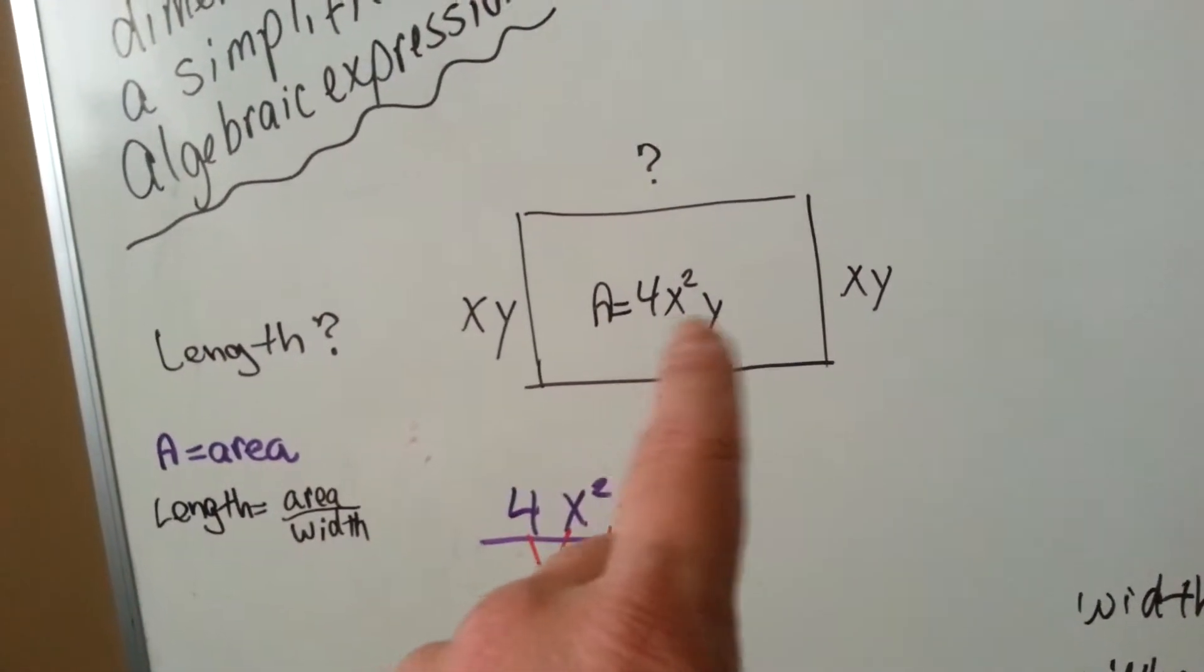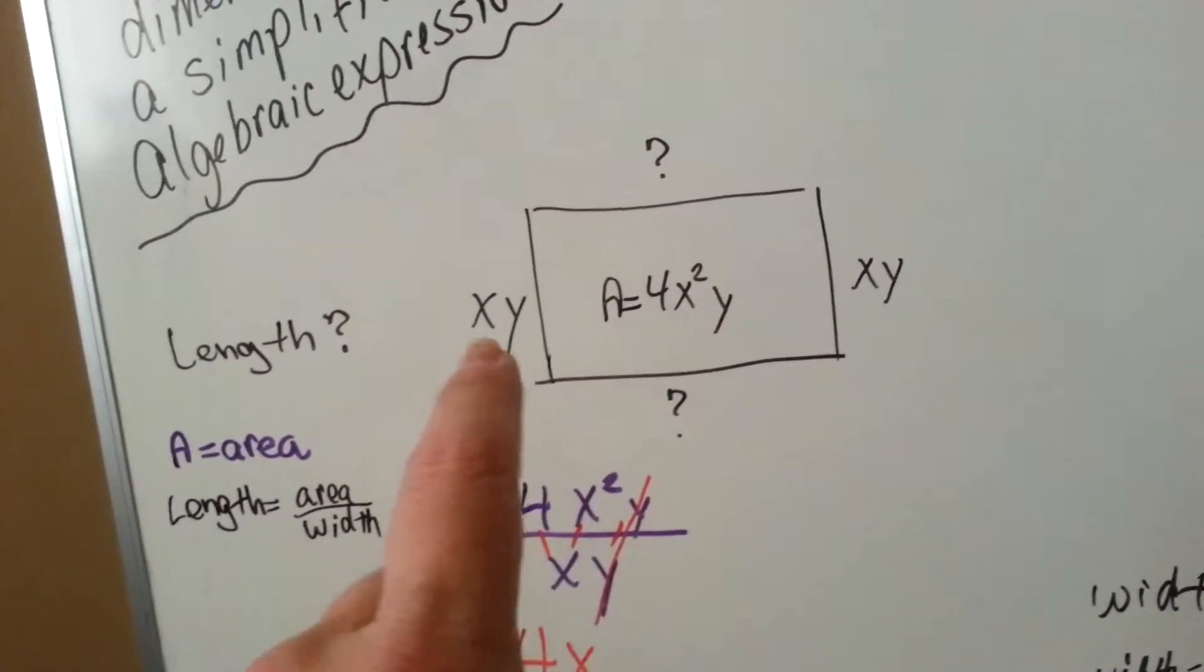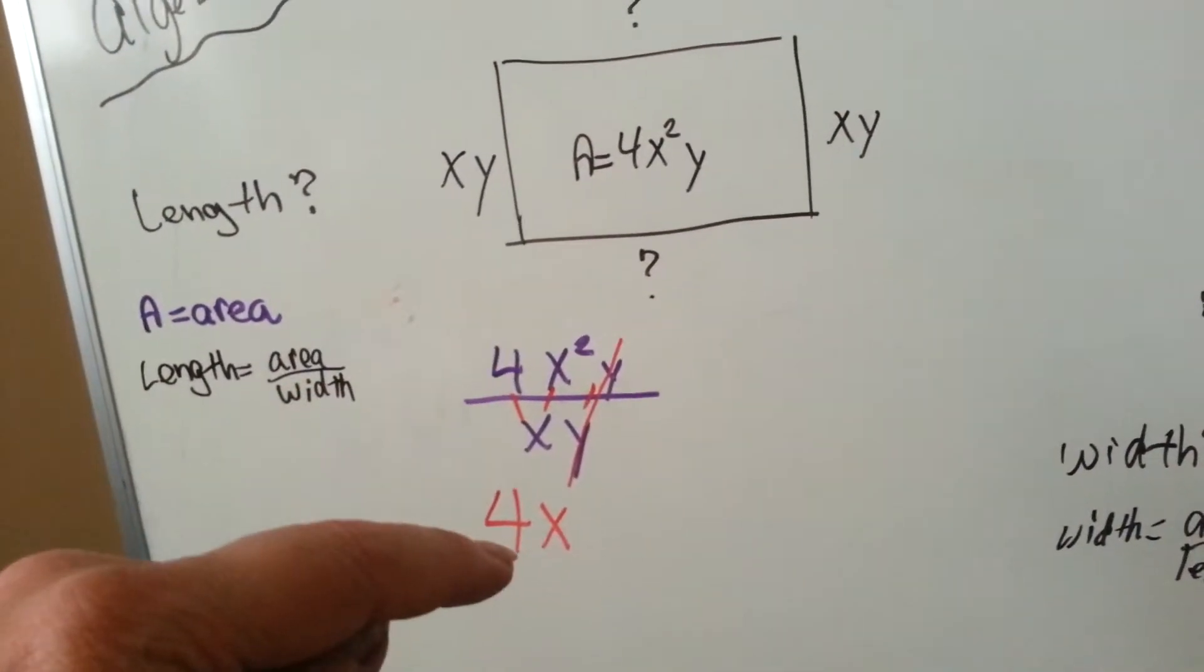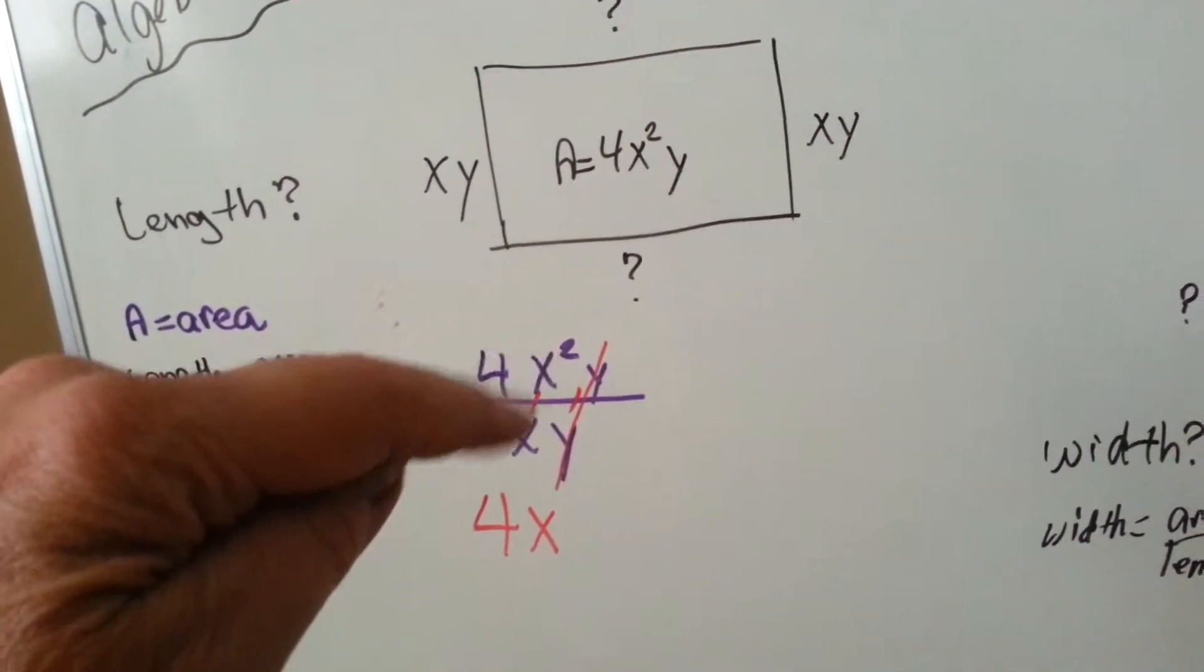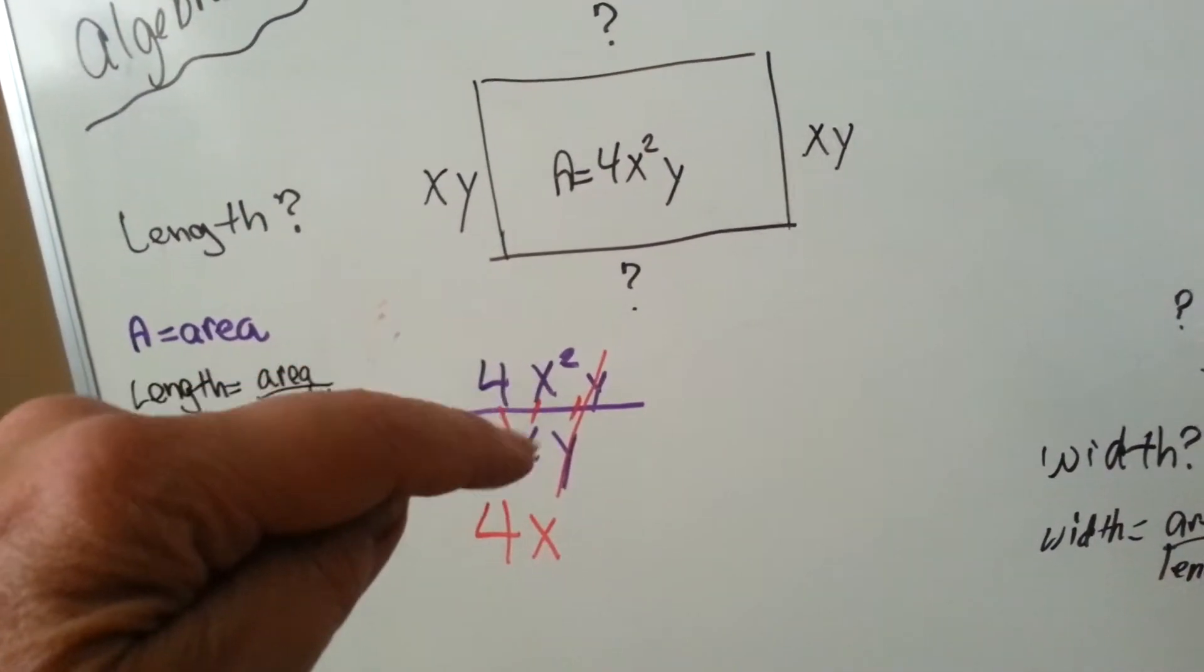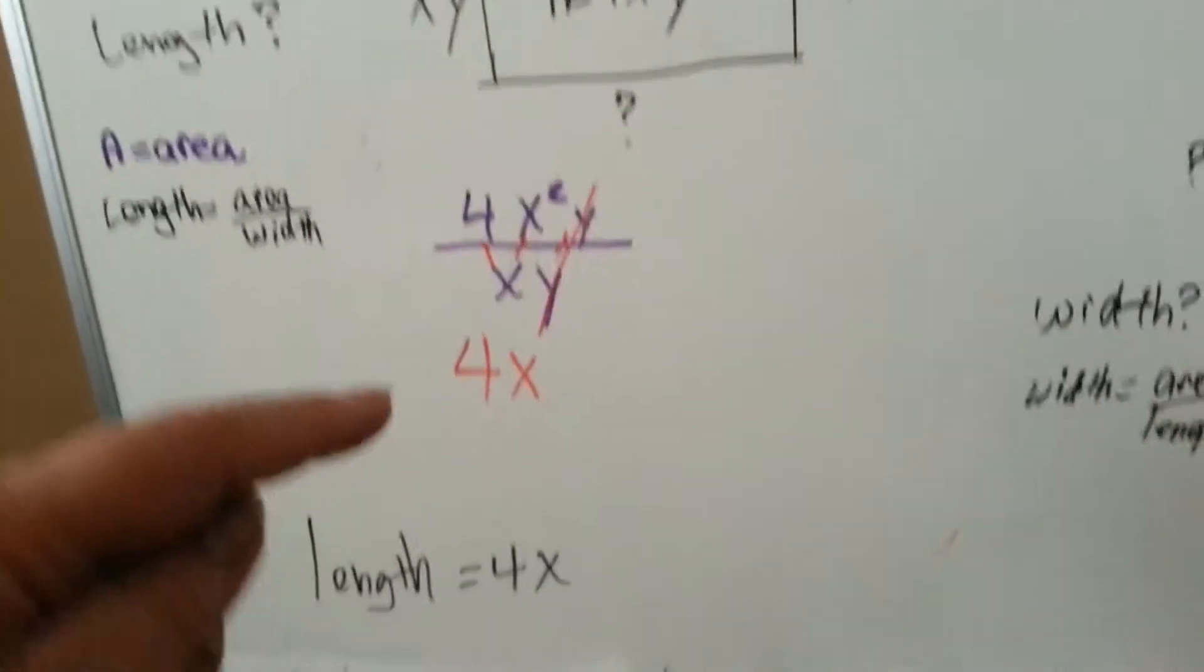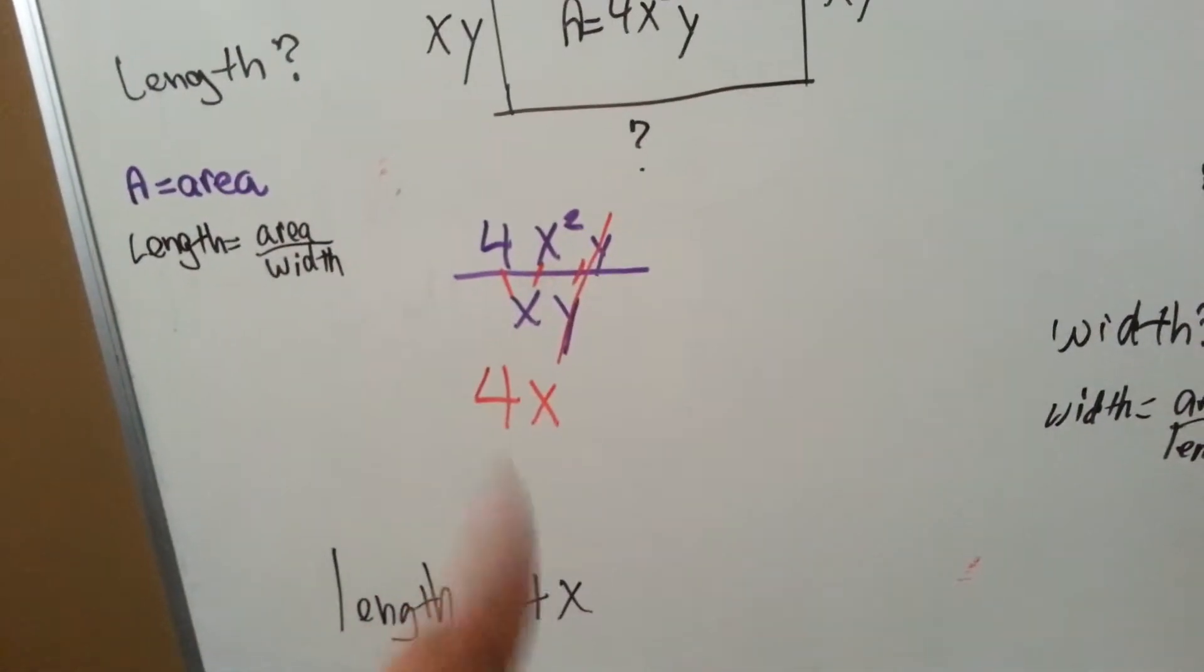So we need to take this area, this 4x squared y, and divide it by the xy. Well, the 4 is going to drop down. This x is going to turn into a 1, because 2 take away 1 is 1, and the y's are going to cancel each other out, and guess what? The length is 4x.